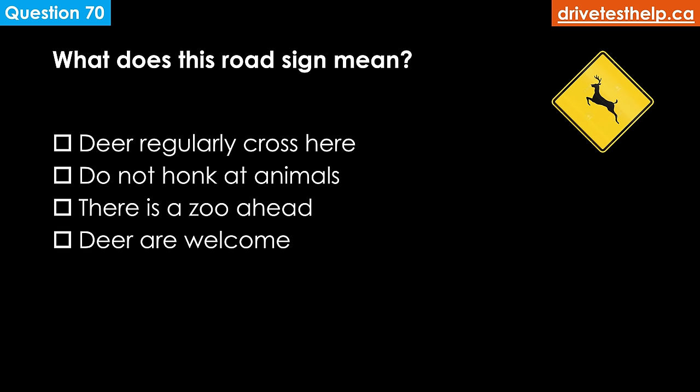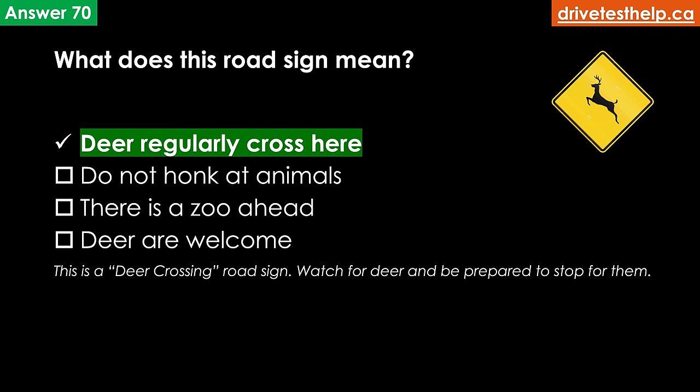What does this road sign mean? Options: deer regularly cross here; do not honk at animals; there is a zoo ahead; deer are welcome. The correct answer is deer regularly cross here. This is a deer crossing road sign — watch for deer and be prepared to stop for them.